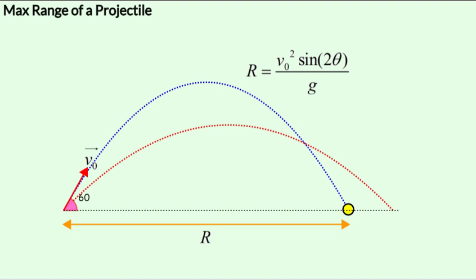Now this is launched with the same speed but with an angle of 60 degrees. And again, as predicted by the formula, the range with the launch angle of 60 is less than the range with the launch angle of 45. 60 is this blue curve that you see and 45 is the red one.